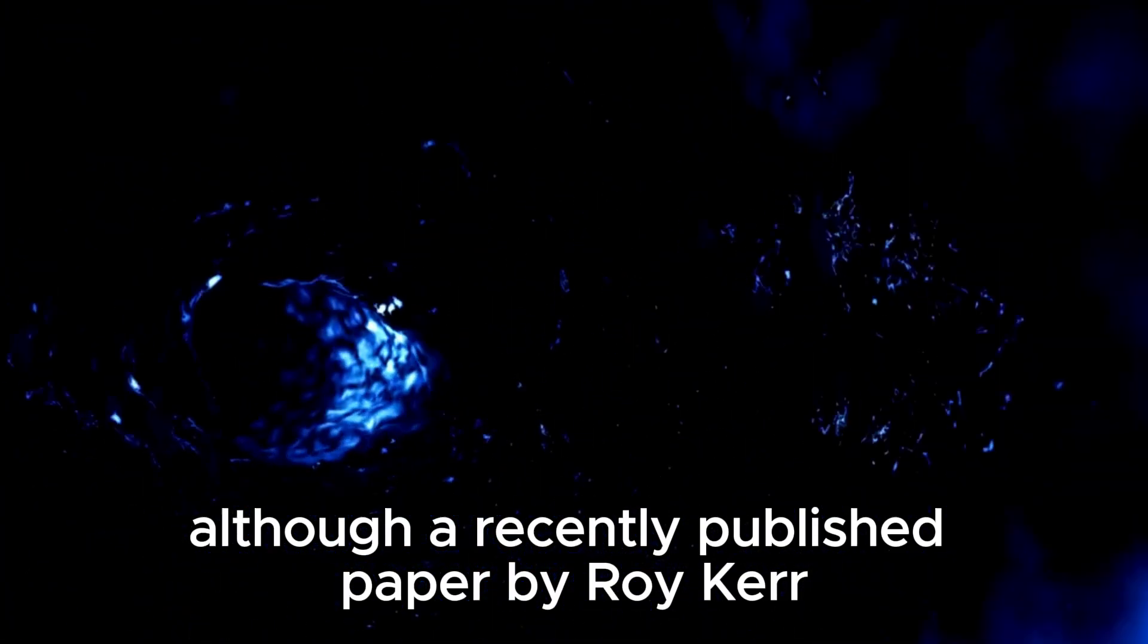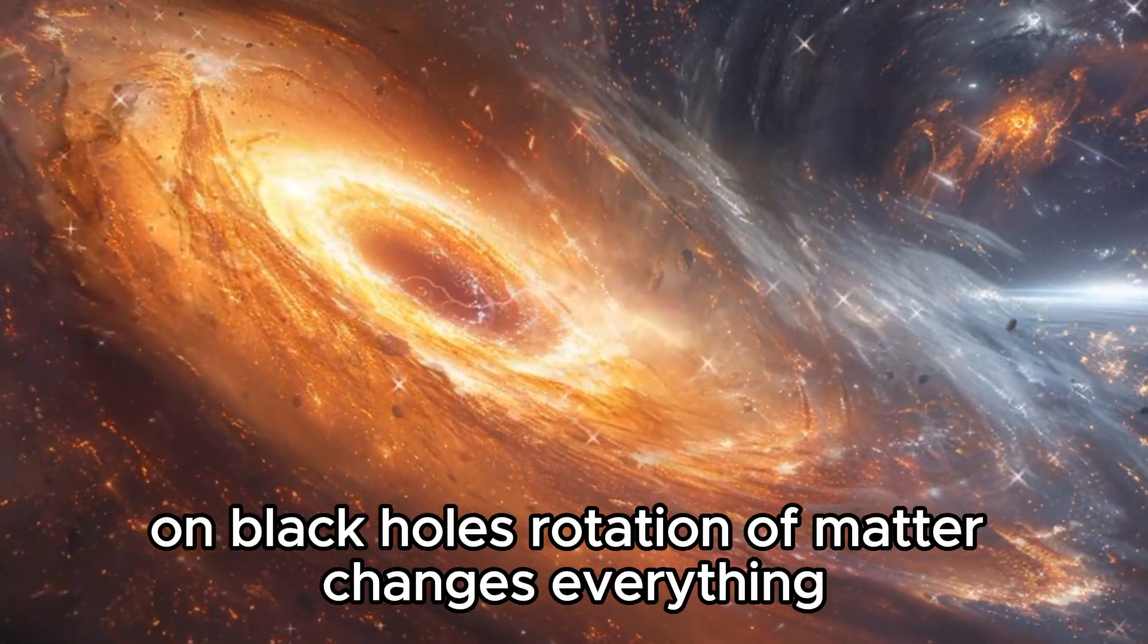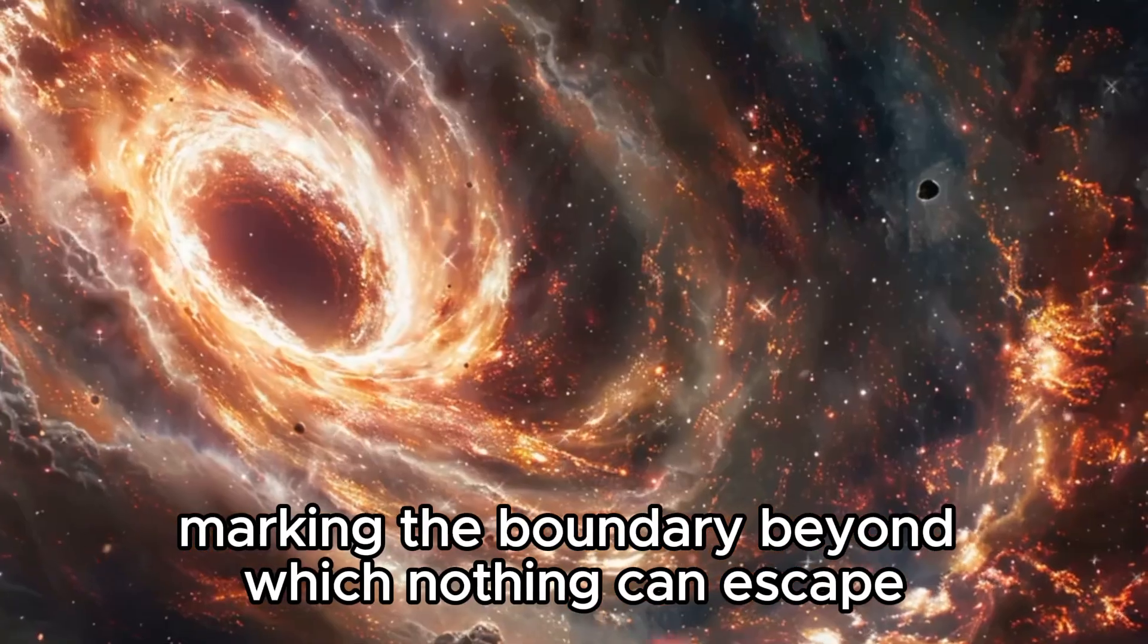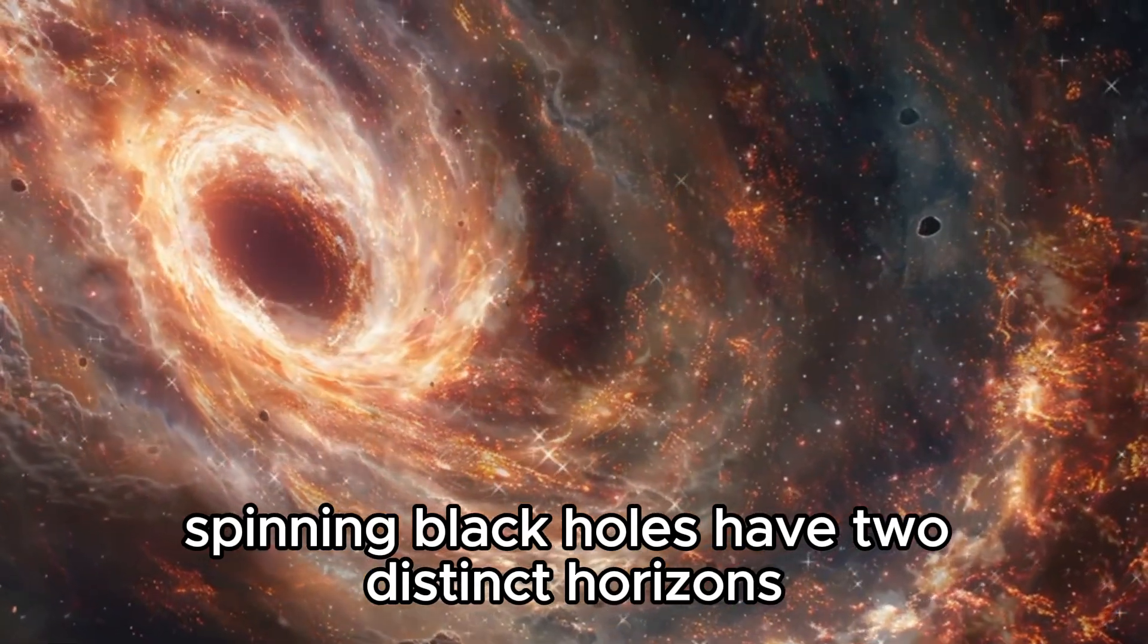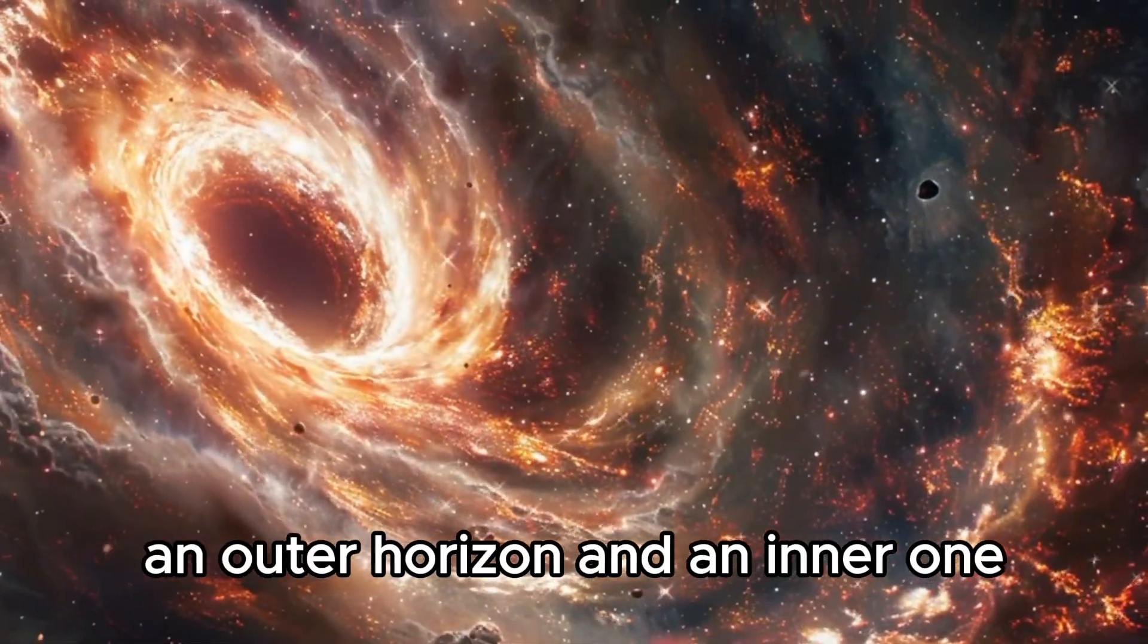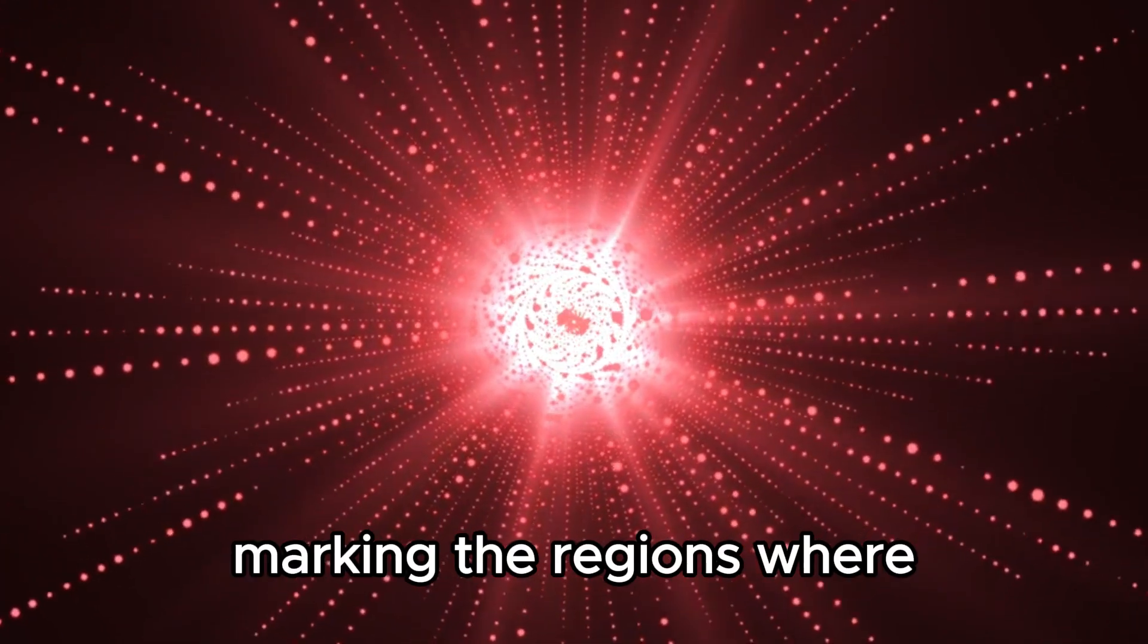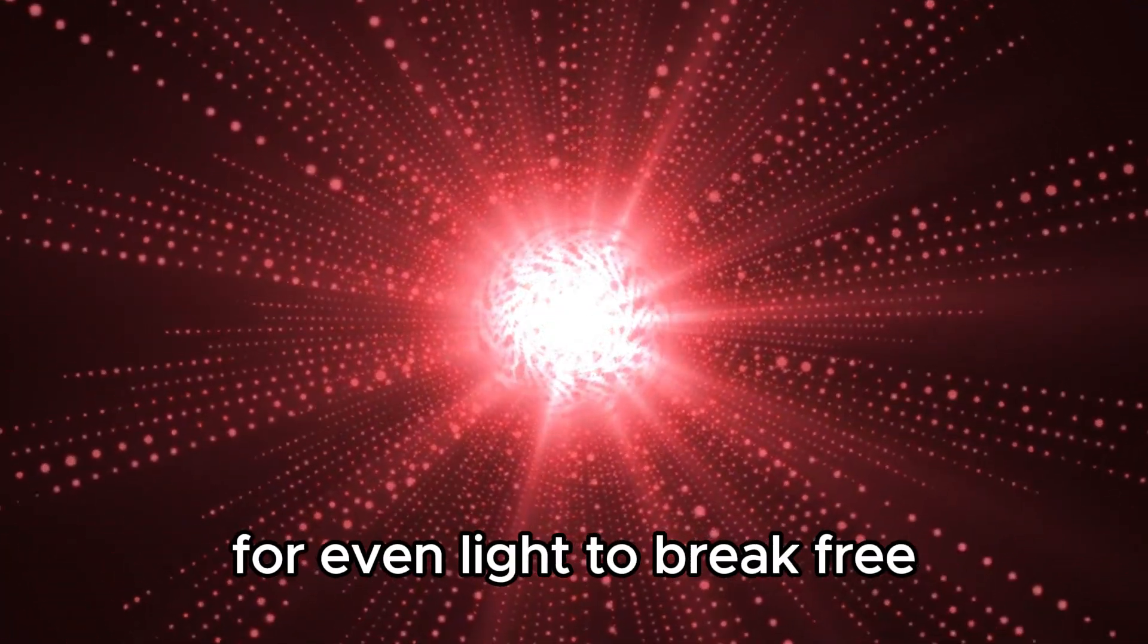Rotation of matter changes everything. Instead of a single event horizon marking the boundary beyond which nothing can escape, spinning black holes have two distinct horizons, an outer horizon and an inner one. These horizons are like invisible walls, marking the regions where the gravitational pull becomes too strong for even light to break free.